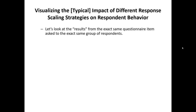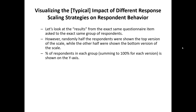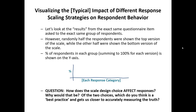Let's take a look at some different response scaling strategies and see how we can anticipate how they will affect respondent behavior. We're going to look at results from the exact same questionnaire item but asked to two different groups of respondents — in other words, a simple A/B experiment. Half of them saw the question with one scale; the other half saw a different scale. We'll report results by showing response categories on the x-axis and percentage of respondents on the y-axis. By looking at these, we'll figure out how scale design choice affects how people respond, and among the two options shown, we'll try to figure out which one is generally a best practice.